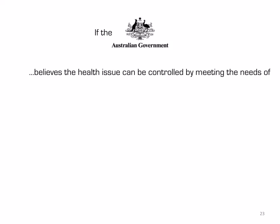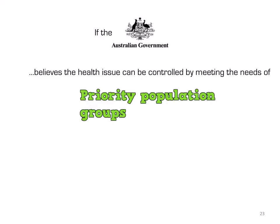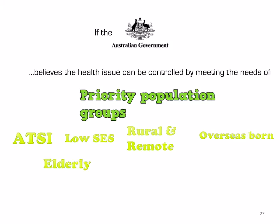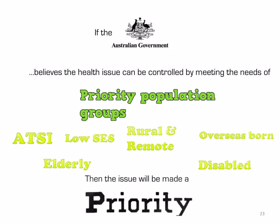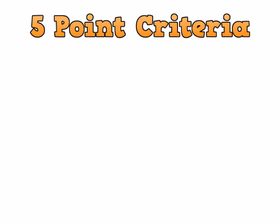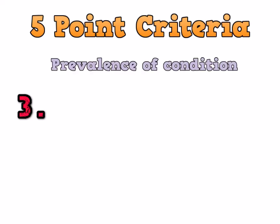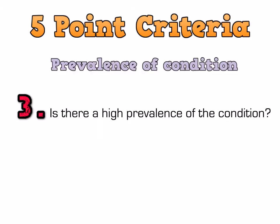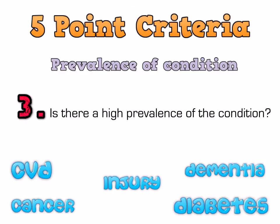If the Australian government believes that the health issue can be controlled by meeting the needs of particular population groups — such as ATSI, low SES, rural and remote, overseas-born, elderly, and the disabled — then it is likely that the issue will be made a priority. The next step in the criteria is prevalence of condition: how common is the condition? A lot of people in our community have cardiovascular disease, cancer, injury, dementia, and diabetes, among others.